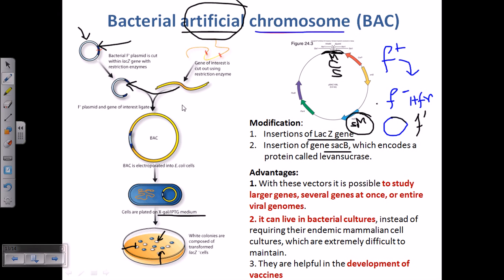When the insert is done properly, no blue color is observed — we see white colonies. However, if the insert is not done properly and the vector self-ligates, the lacZ gene remains intact, beta-galactosidase is expressed, it acts on X-gal, and we get blue colonies. So white colonies indicate successful insertion, and blue colonies indicate self-ligation without insert.